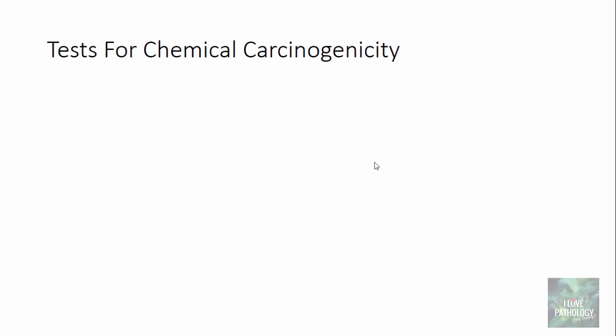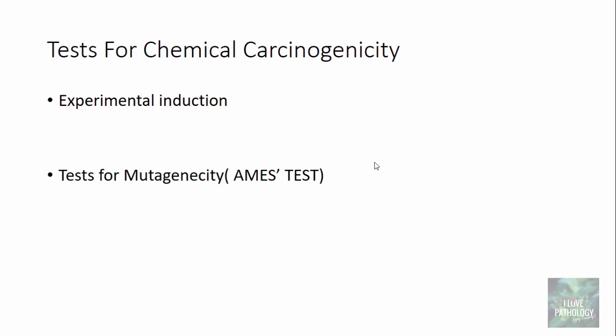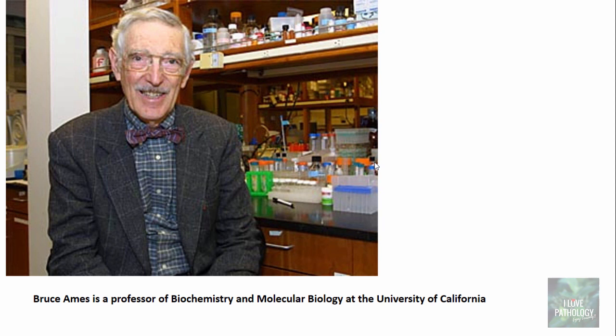There are two kinds of tests for chemical carcinogenicity: experimental induction of cancers, and tests for mutagenicity — the famous Ames test. In experimental induction, a chemical is applied to an animal model repeatedly to induce cancers. The major disadvantage is that it is prolonged and expensive, and the results cannot be applied to humans because every species reacts differently to a carcinogen.